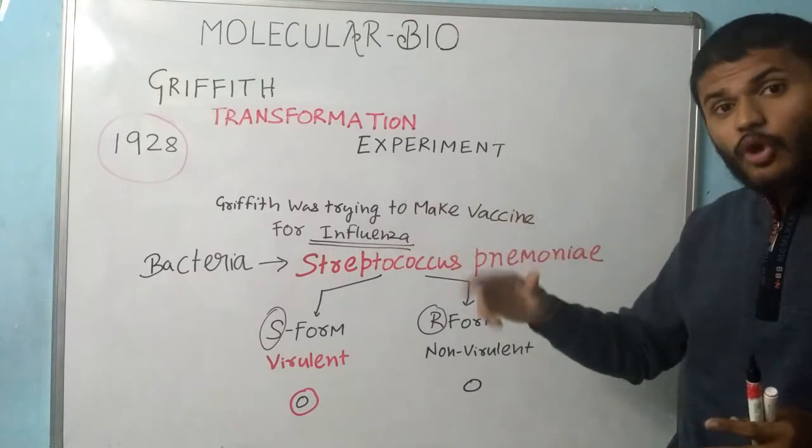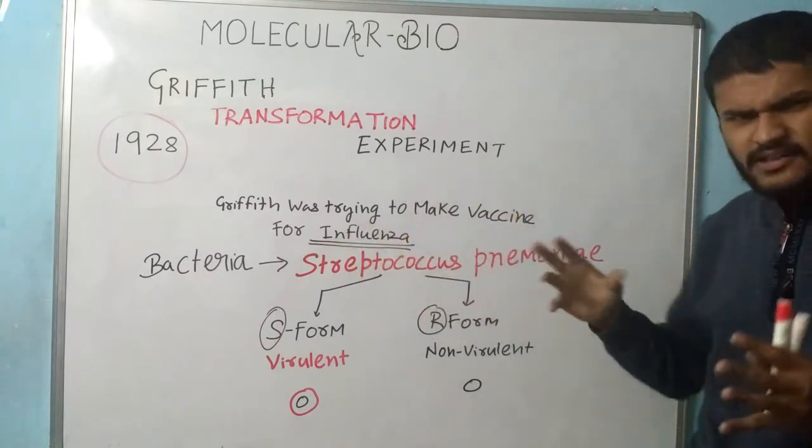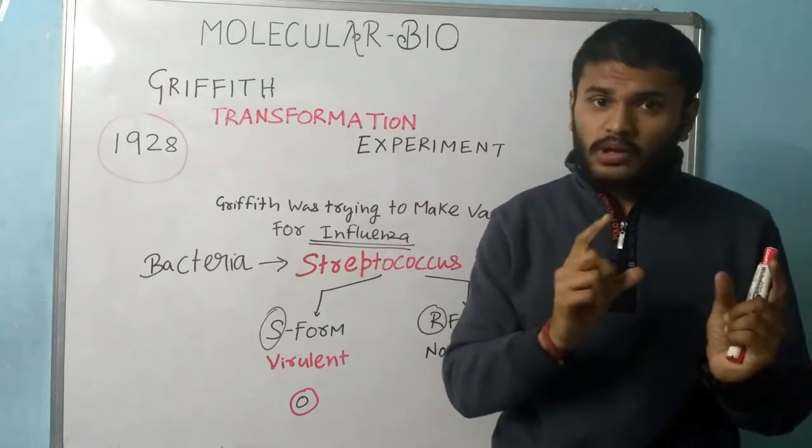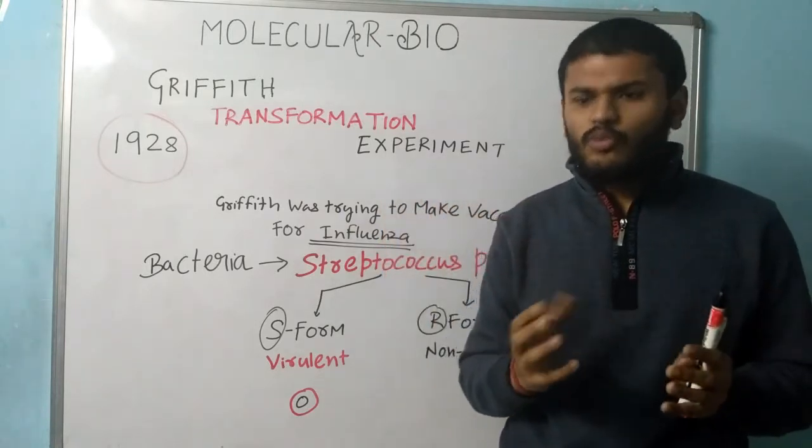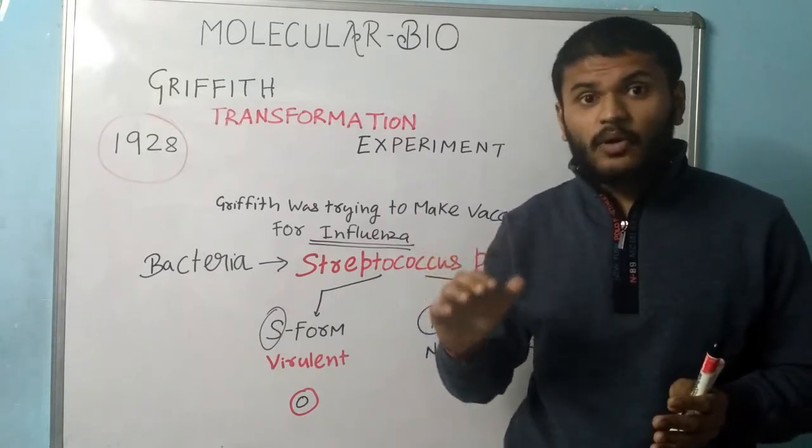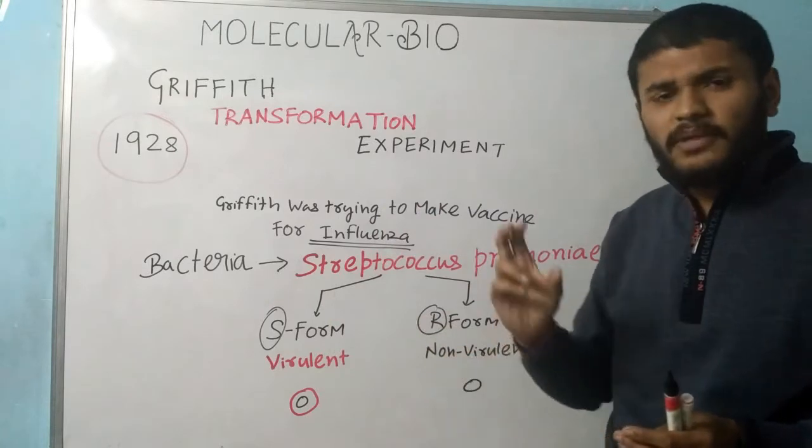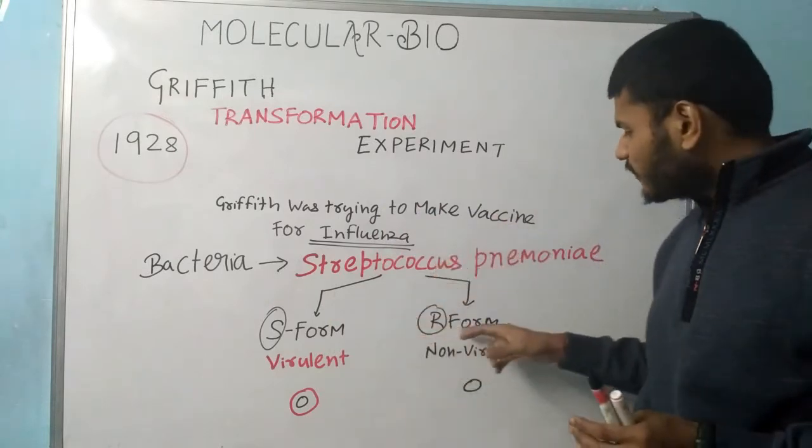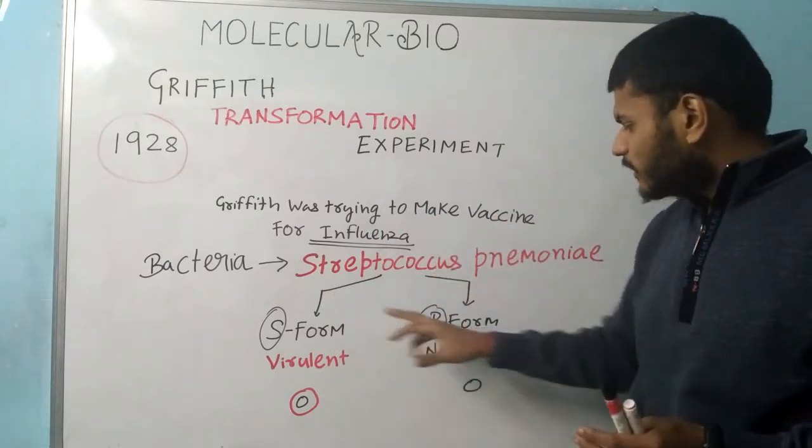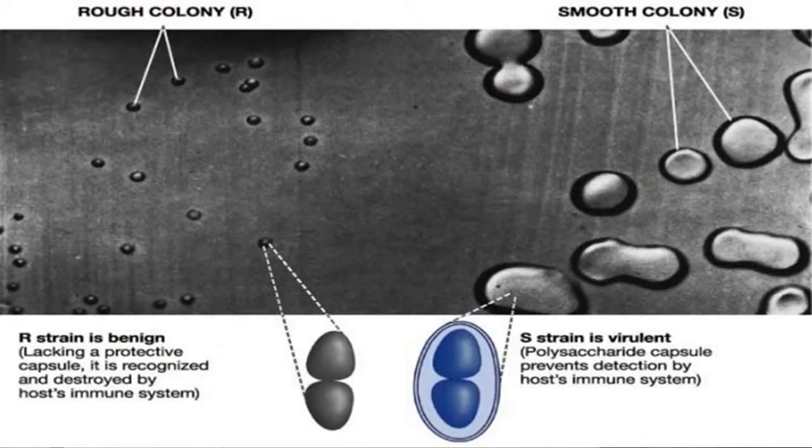This bacteria has two forms: one is smooth and one is rough. Smooth is called smooth because when it is cultured in a dish it forms a smooth colony, and rough because it forms a rough colony. There is an enzyme present in the smooth form for making polysaccharide and in the R form it's absent. The smooth form is virulent and the R form is non-virulent, so virulent means it causes disease and non-virulent doesn't cause any disease.